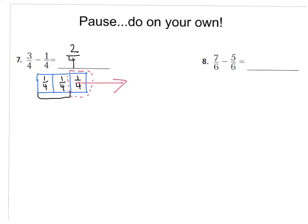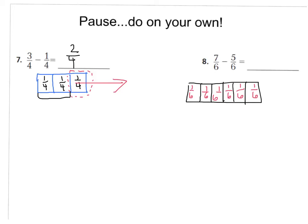For question number eight, it may look improper — and it is improper — but it is still a true fraction. Seven-sixths would look like a model with one whole and one more sixth. I'm going to create one whole cut into six. I'll cut it in half first, then cut each half into thirds, creating six-sixths: one-sixth through six-sixths. According to my question, I need seven-sixths, so I'll make one more sixth and label it. All together, I now have seven-sixths.